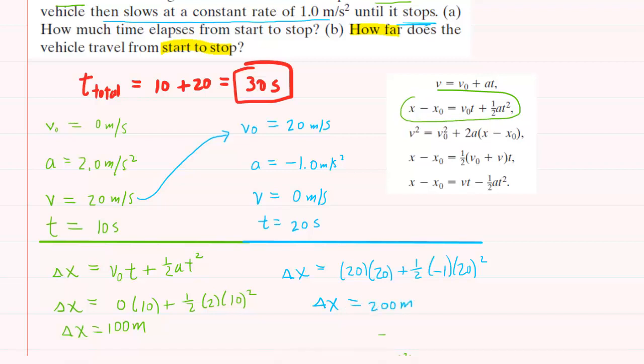Now because the vehicle was traveling in a simple straight line, it wasn't stopping and turning around or anything like that, we can get the total displacement from start to stop by adding these two displacements together. So it's going to be 100 meters plus the 200 meters, which of course gives us 300 meters. So this would be the correct answer to part B.